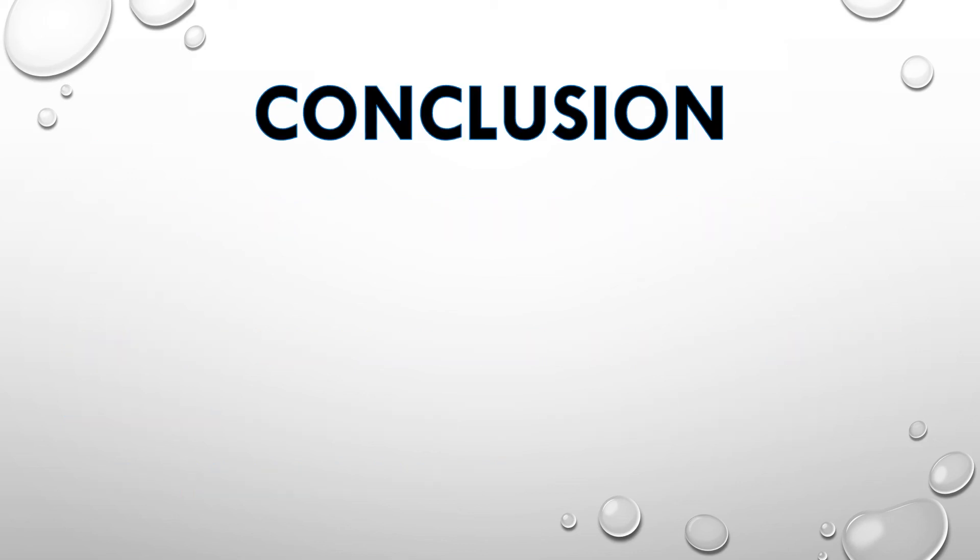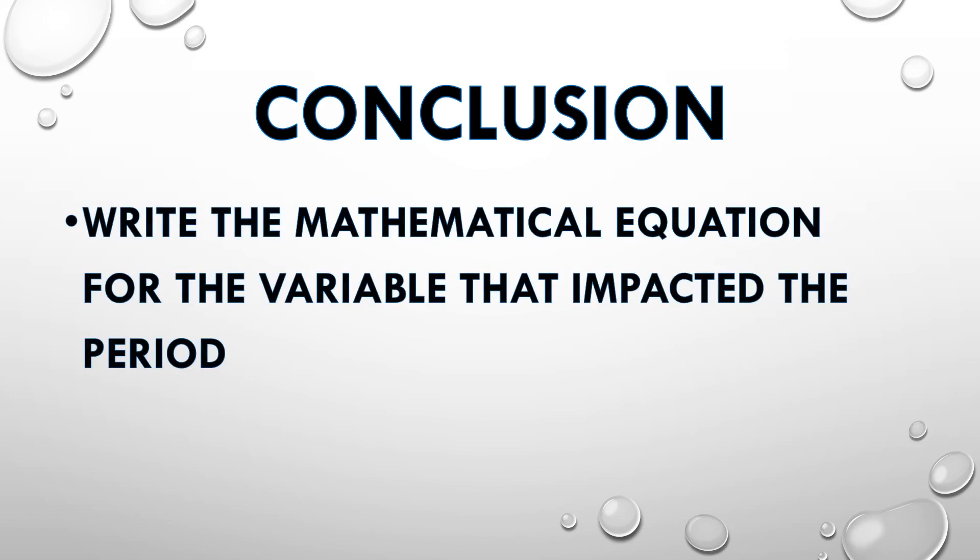Once you have graphed all of your data, you can start to write the mathematical equation for the variable that impacted your period. Two of these variables will have no impact on the period. One will either increase or decrease the period. That is the variable for which you want to write a mathematical equation.